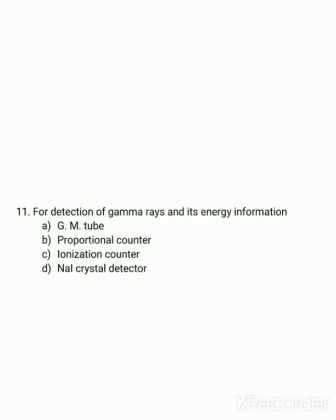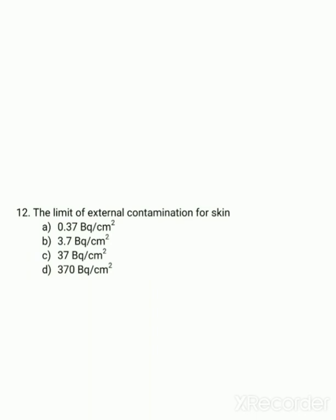For detection of gamma rays and their energy information, both can be determined using a sodium iodide (NaI) crystal detector. The limit of external contamination for skin is 3.7 becquerel per centimeter squared.